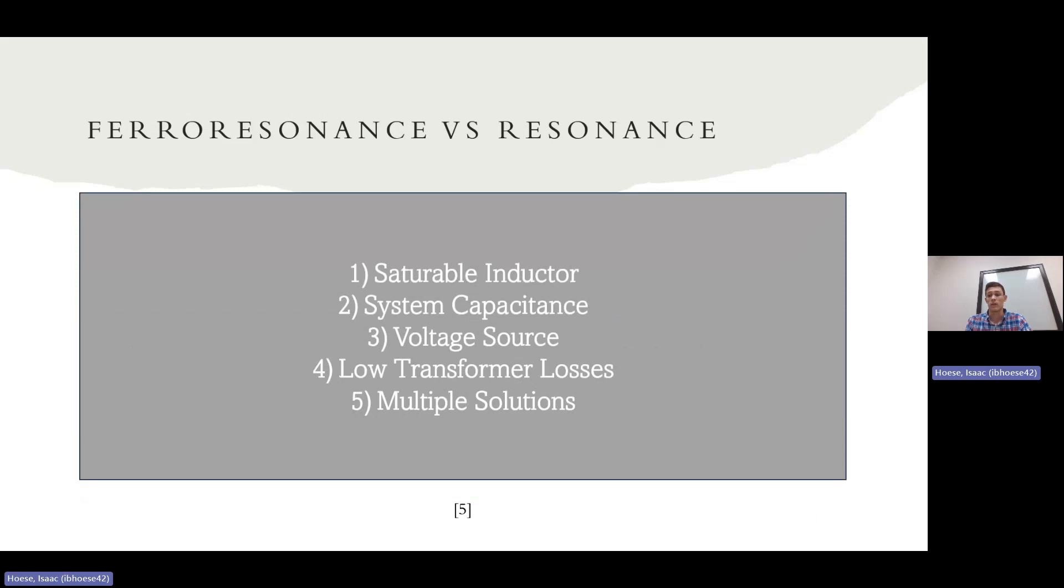Kruger, which is an author that I'll be citing multiple times in this presentation, states that there are five main reasons or requirements for ferroresonance to occur. First is the saturable inductor. That's the iron core of the transformer. Number two is system capacitance. In our case, it'll be underground cable. Number three is the voltage source. Obviously, all power systems have a voltage source, whether it's the transformer or the generator, whichever one you want to take as your voltage source.